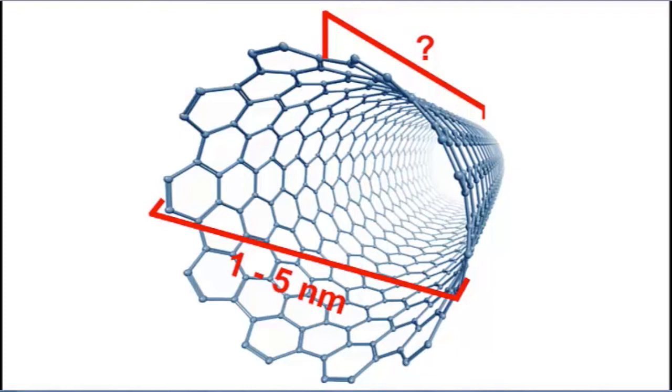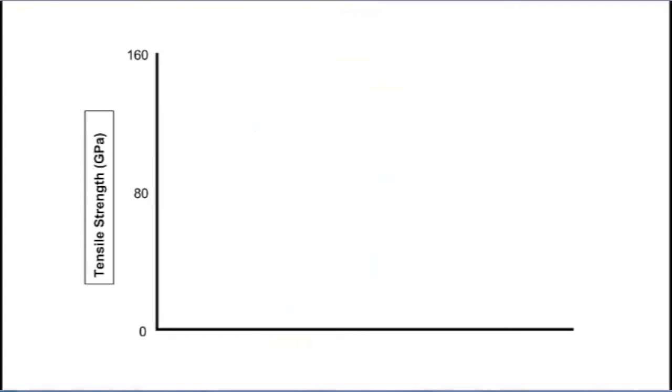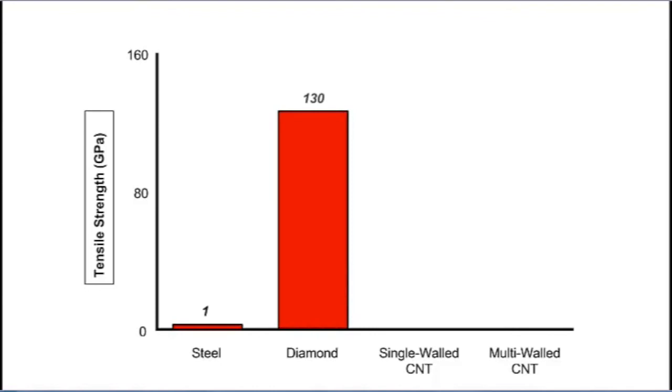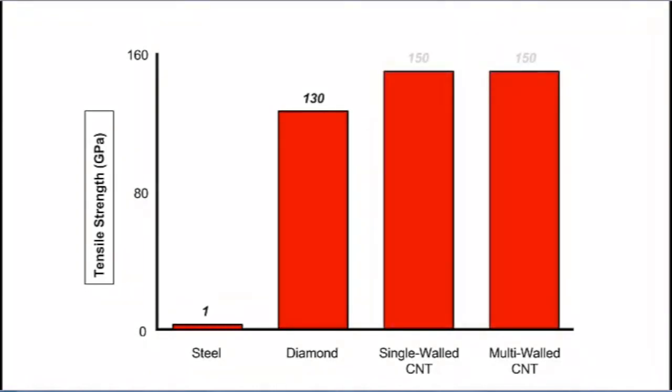Nanotubes are making waves in the world of engineering due to some of their shocking properties. Consider the tensile strength. Steel, measuring in at one gigapascal, is strong enough to hold suspension bridges and is used to design vehicle chassis. Diamond, commonly known to be one of the strongest materials on earth, outpaces steel drastically, but carbon nanotubes, measuring in at one hundred and fifty gigapascals, leave even diamond behind.